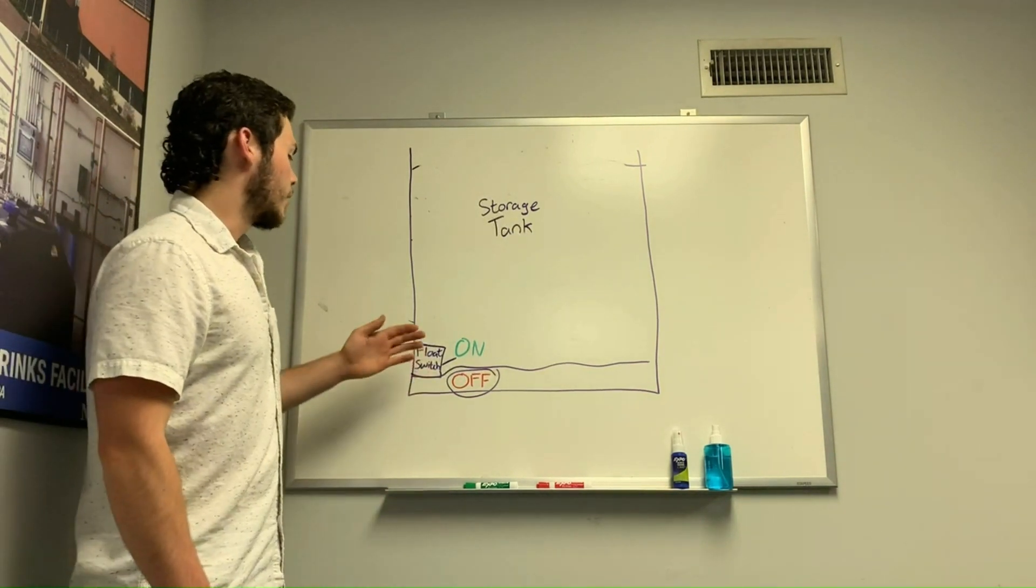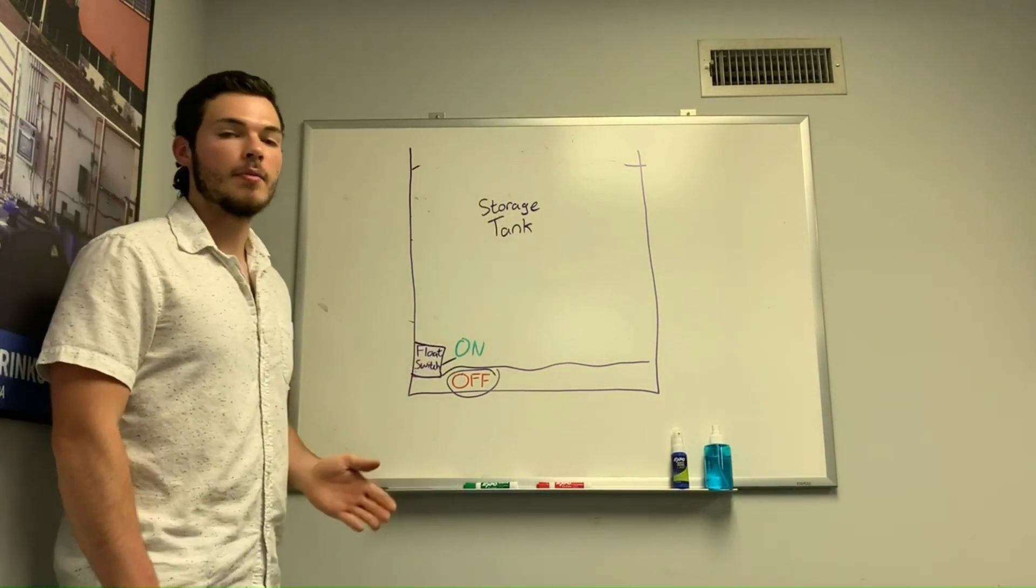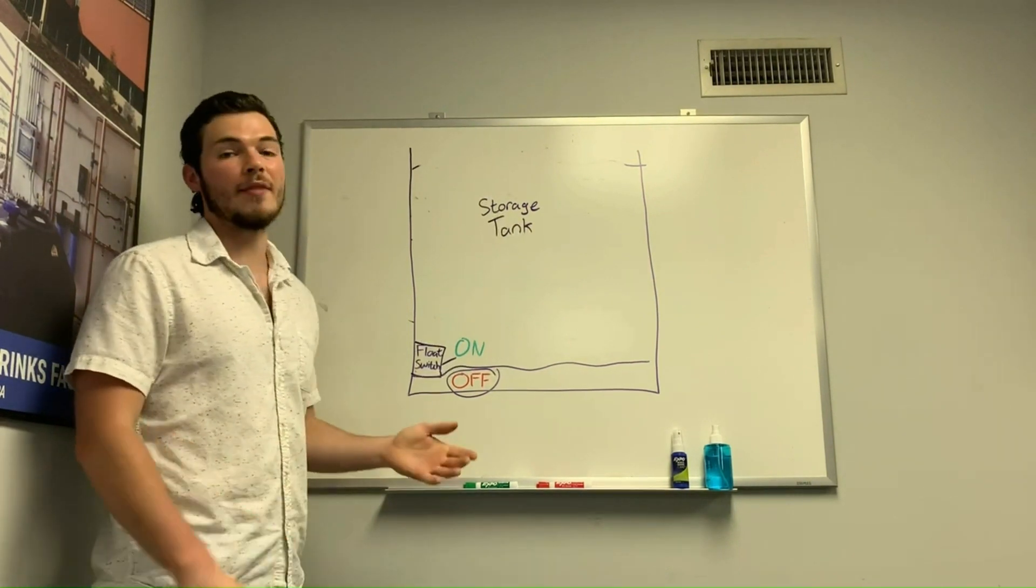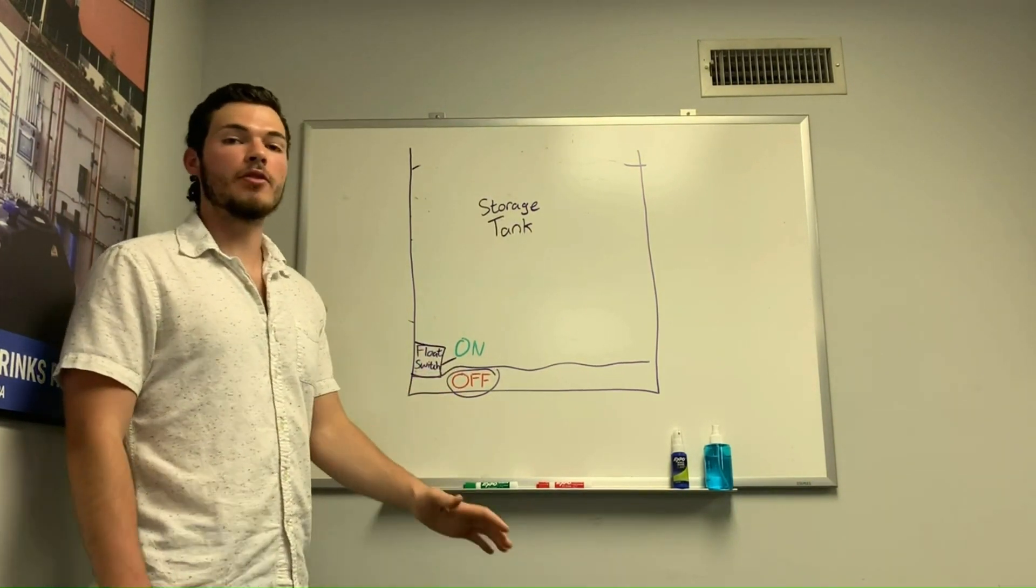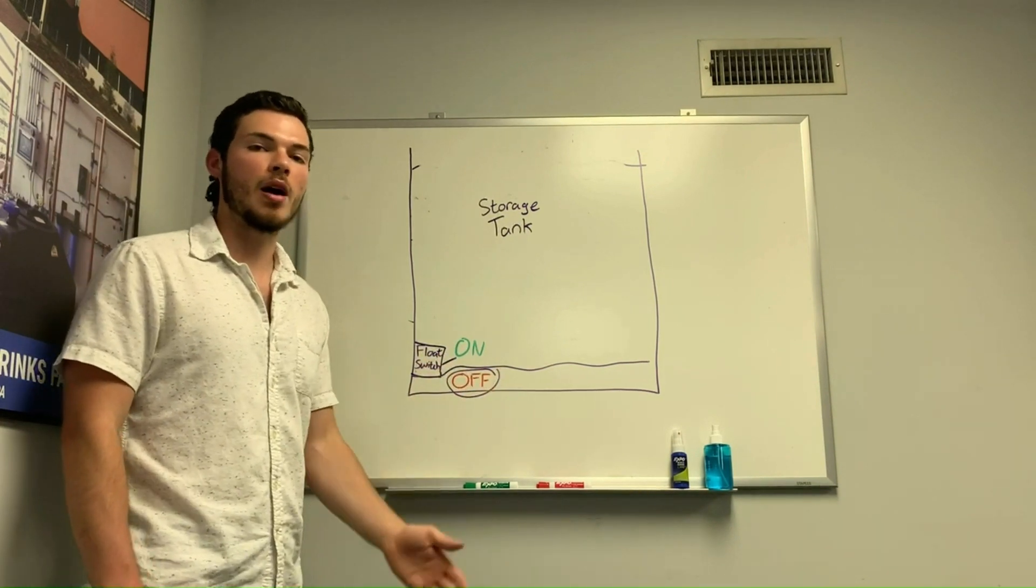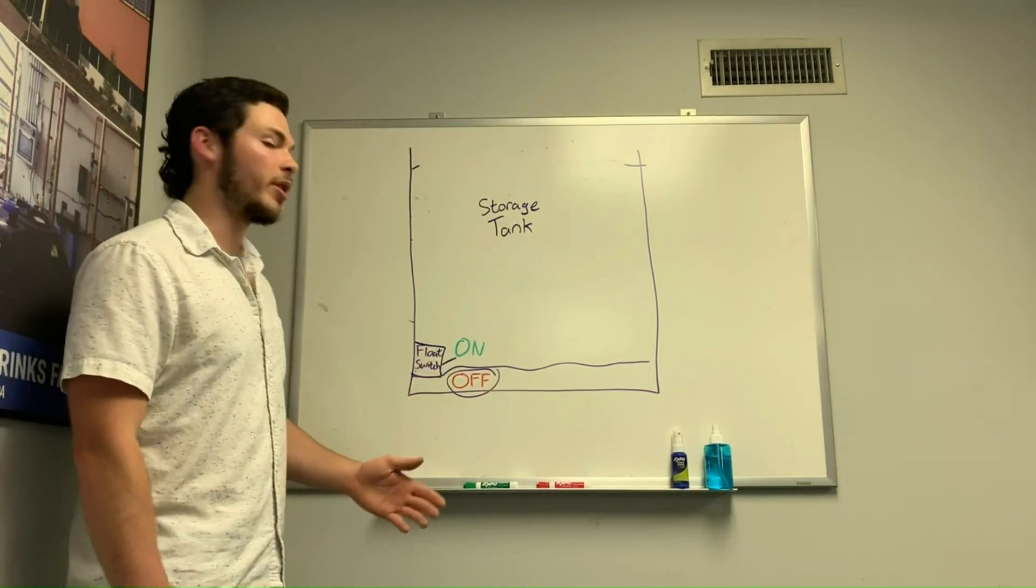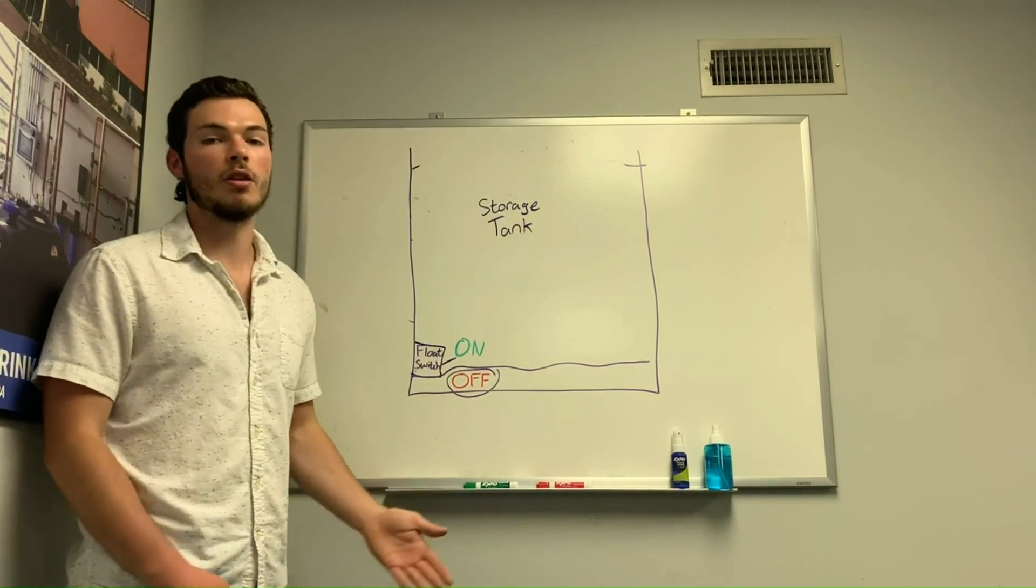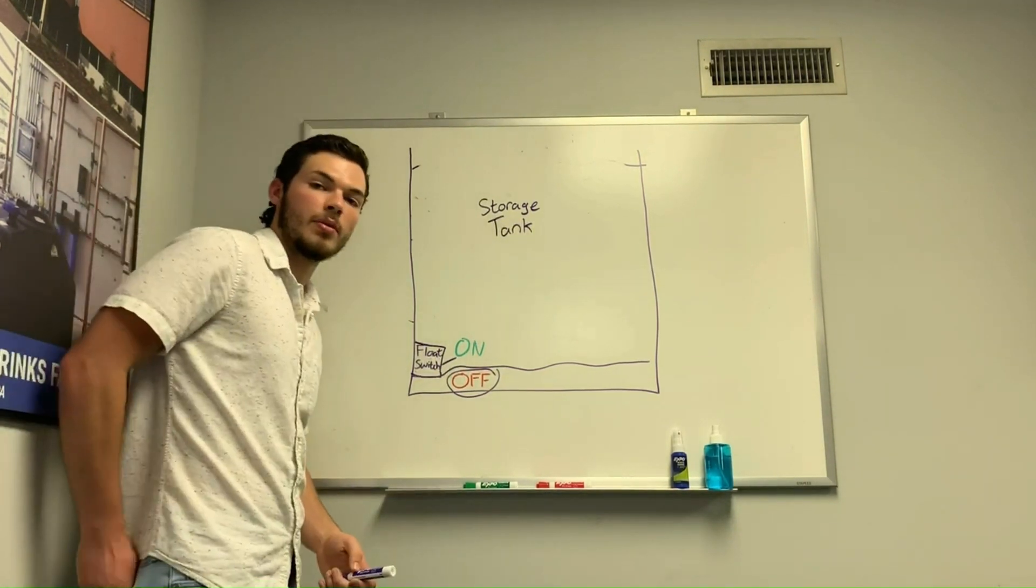They're often at the bottom of the tank because we don't want the tanks to empty all the way. Usually we have sediment settling to the bottom of your tank and we don't want to pump all of that sediment through the pump - it will damage the pump. Also, we don't want to empty the tank all the way so that the pump starts pumping air. That's called dry running and it will also damage your pump.